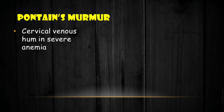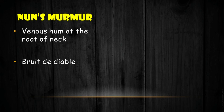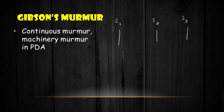Pontaine's murmur is a venous hum that can be heard in the cervical region due to severe anemia. Nuns' murmur is also a venous hum at the root of the neck and is also called Bruit de Diable.